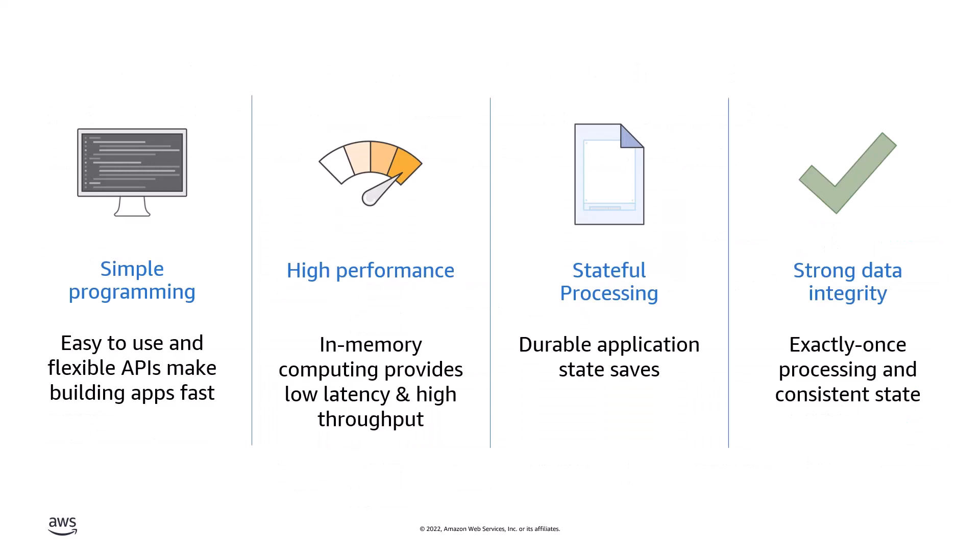With Kinesis Data Analytics for Apache Flink, you can use Flink's native APIs to build any type of application using SQL, Java, Python, or Scala. The flexible APIs allow you to focus on your business logic rather than worrying about infrastructure management for stream processing applications. Built on AWS services, Kinesis Data Analytics offers in-memory computing with extremely low latency and gigabytes per second of throughput, and also provides durable application state saves and strong data integrity.